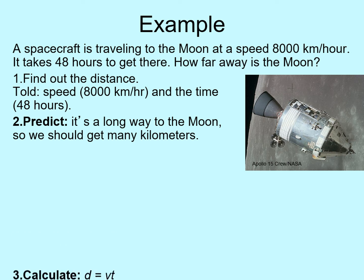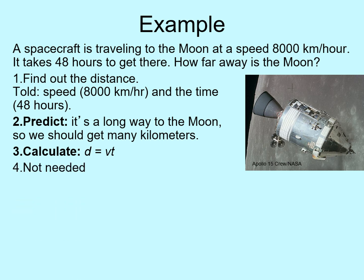Step three is writing down the relevant formula — we should know this one by now: D equals VT. Distance is velocity times time. In other words, if we know the speed and the time, we can find the distance. Step four is asking if you need to look anything up, but it doesn't look like it here — we've got all the information we need. Step five is writing down the equation again, so we just write it out in full: D equals 8,000 kilometers per hour times 48 hours.